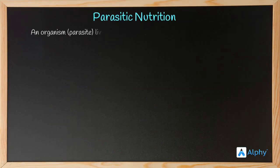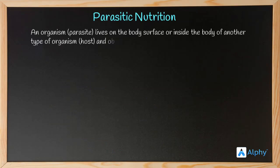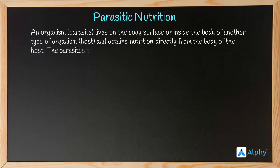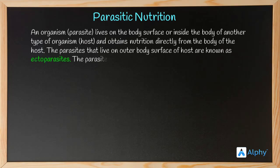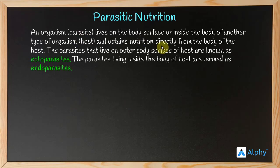Lastly, we have parasitic nutrition. In this case, an organism called a parasite lives on the body surface or inside the body of another organism known as a host, and obtains nutrition directly from the host. Parasites living on the outer body surface are known as ectoparasites, while parasites living inside the body of the host are known as endoparasites.